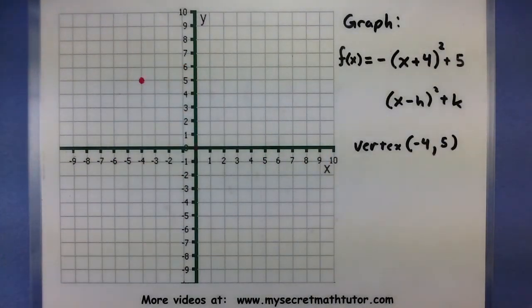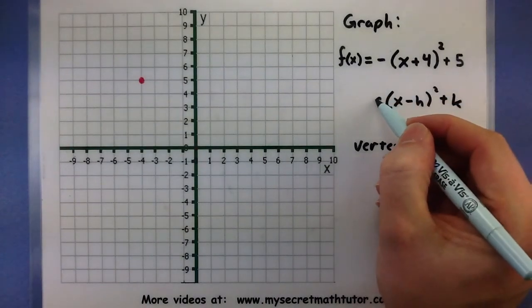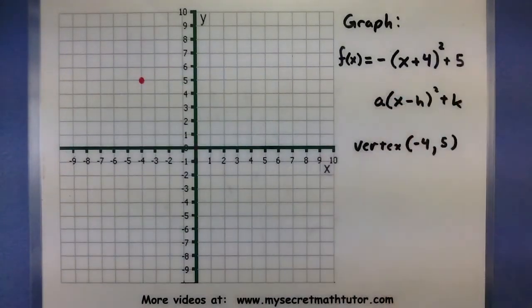Alright, now look out front. This is where that a value lives. It will give us information on stretching, shrinking, or reflections.